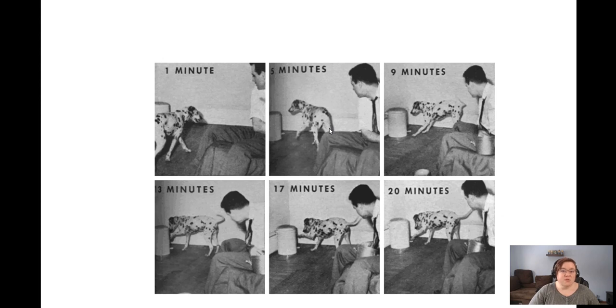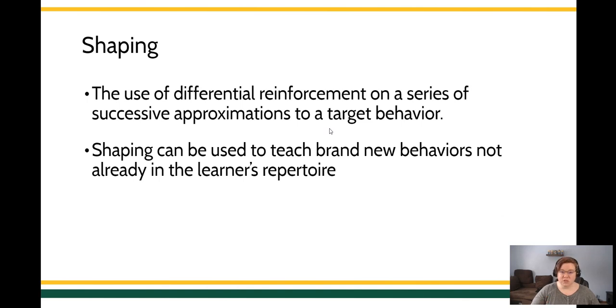Now that's a super simple way of describing what I'm talking about in shaping. But again, it's easier to talk about than it is to do. When we're talking about shaping, shaping is the use of differential reinforcement in a series of successive approximations to a specific target behavior.